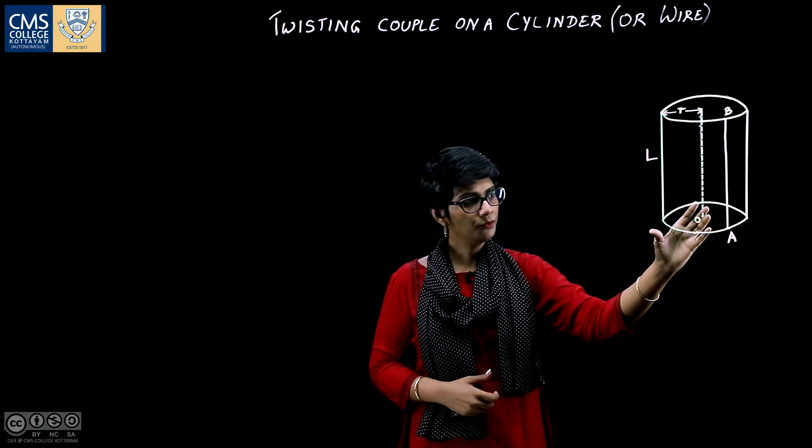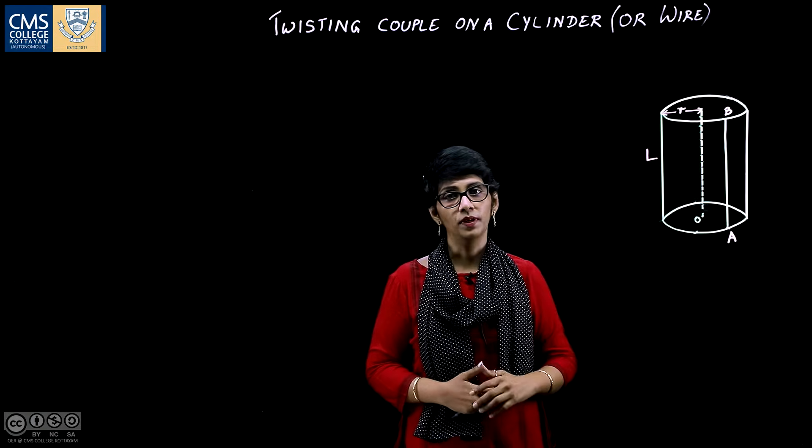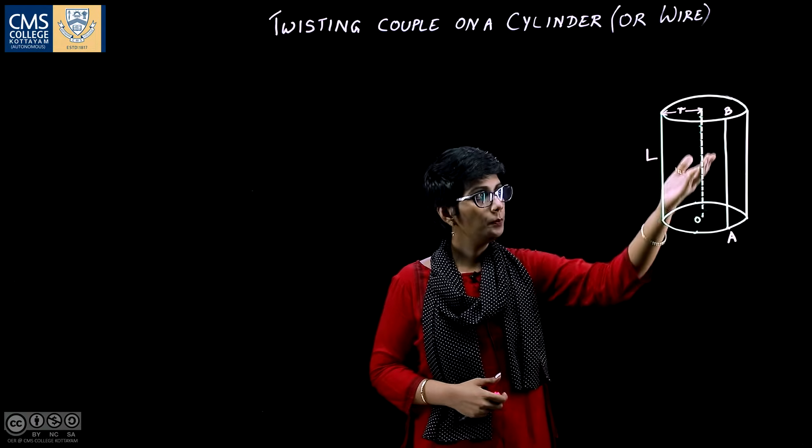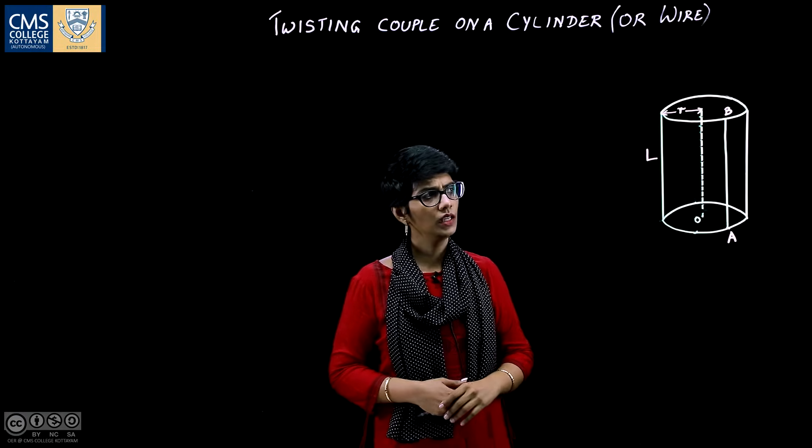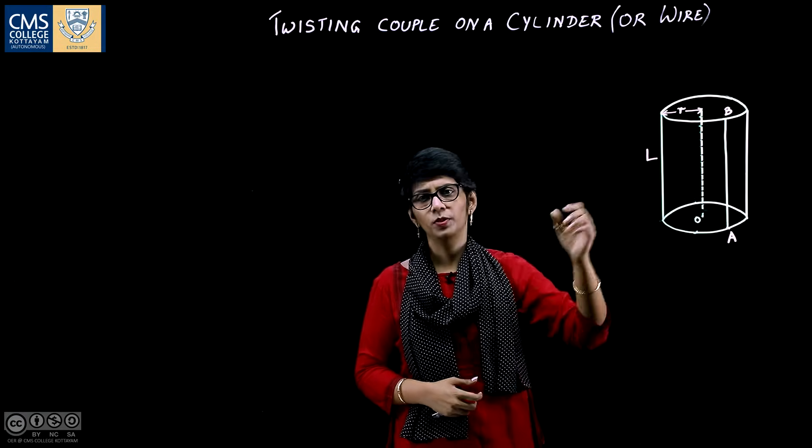Now twist the free end by means of a couple in the plane perpendicular to the length of the rod. Now the rod is said to be under torsion.